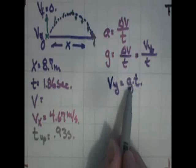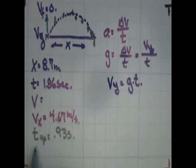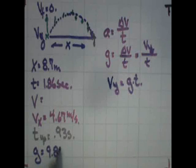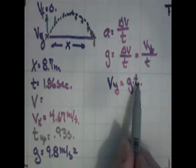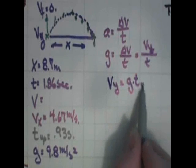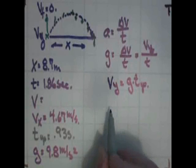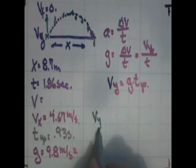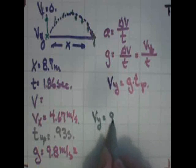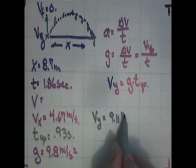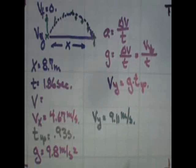So acceleration due to gravity is a known. G is always 9.8 meters per second squared. And multiply that by the time it took to go up, so 0.93 seconds, and see what you get. Did you get a velocity in the y-axis of 9.114 meters per second? That's what I got.